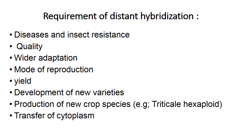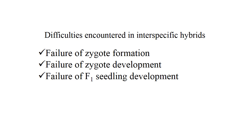Difficulties in distant hybridization are: failure of zygote formation, failure of zygote development, and failure of F1 seedling development. Hybrid incompatibility, hybrid inviability, and hybrid breakdown are the three scientific terms given to these phenomena.